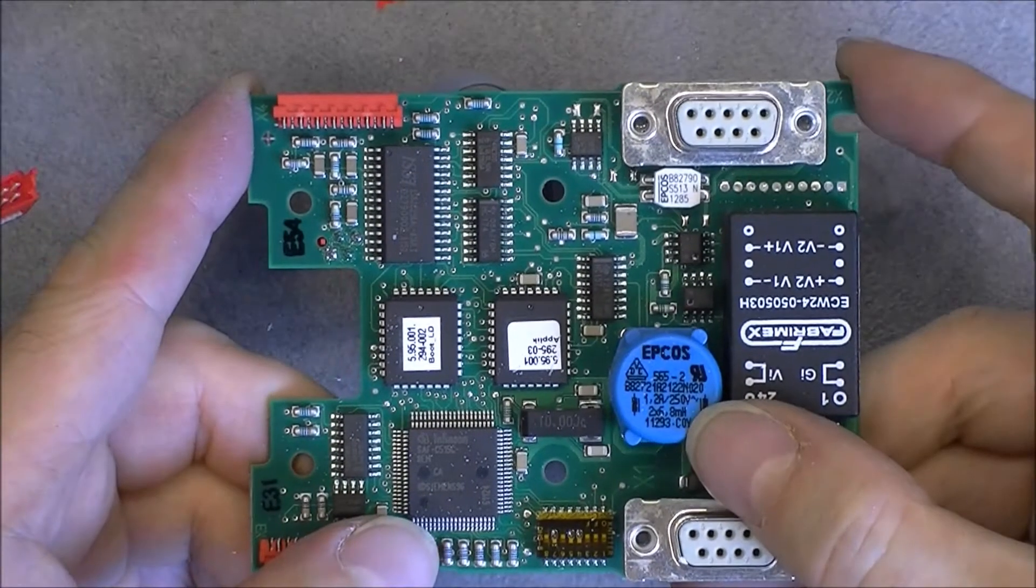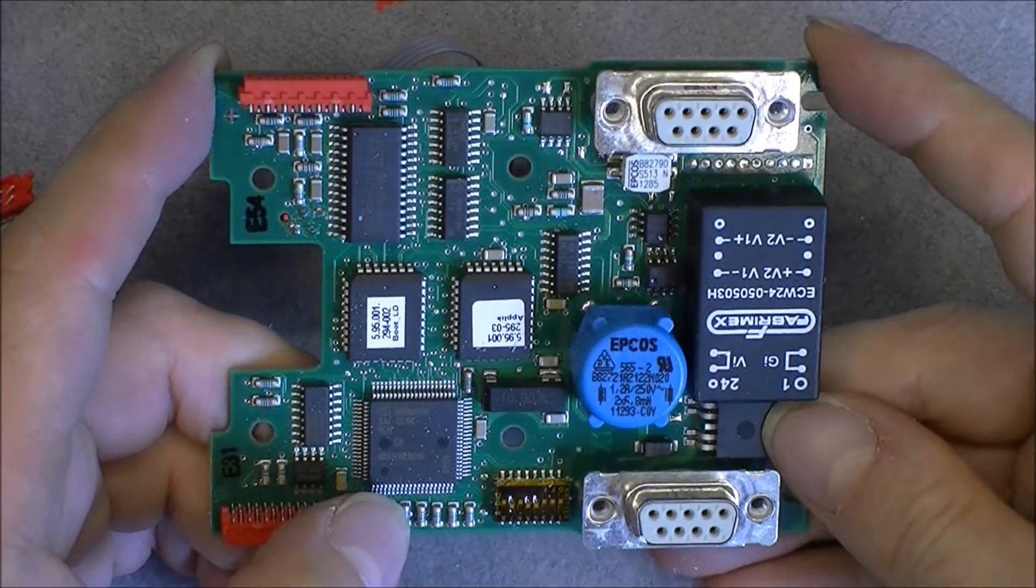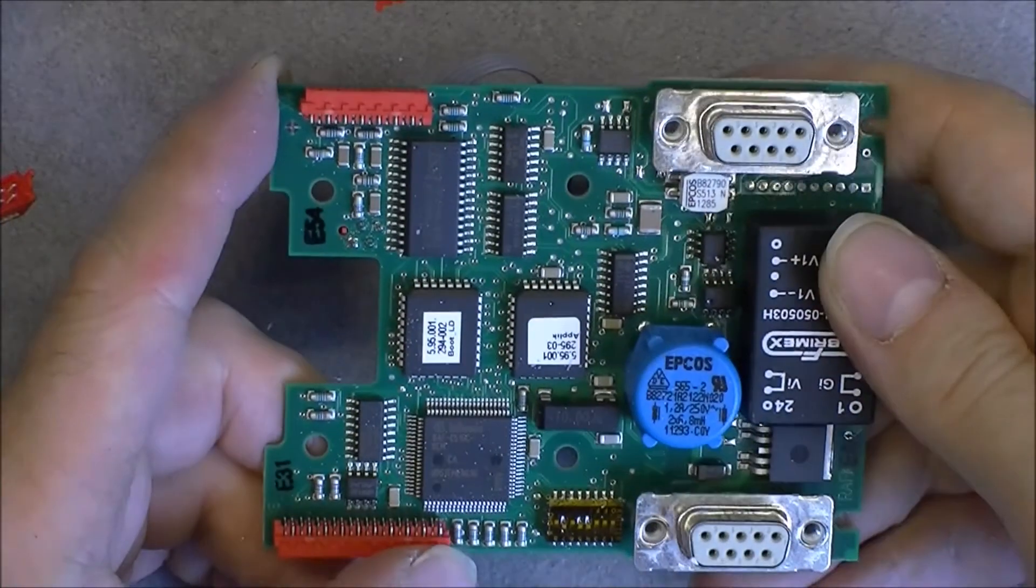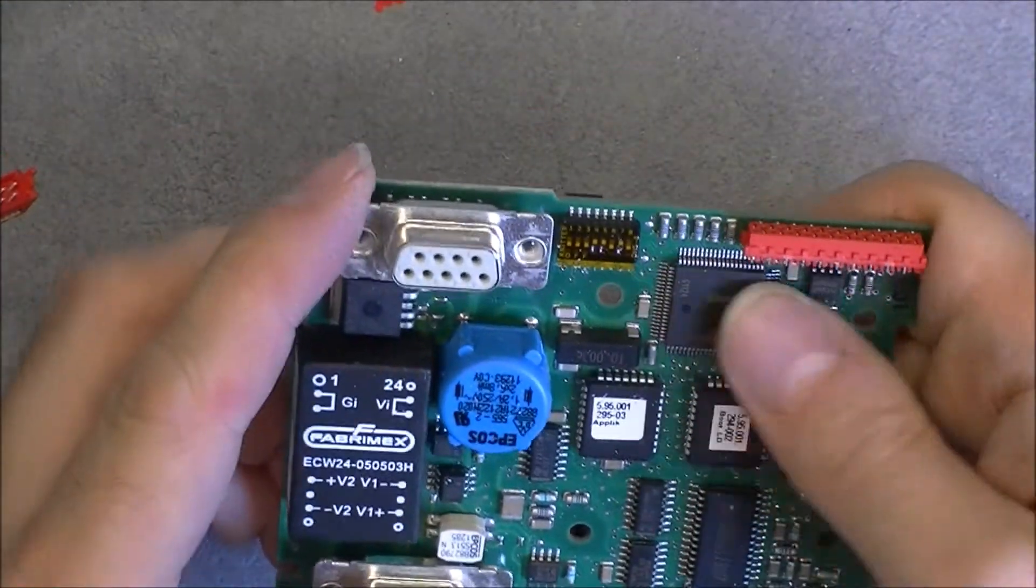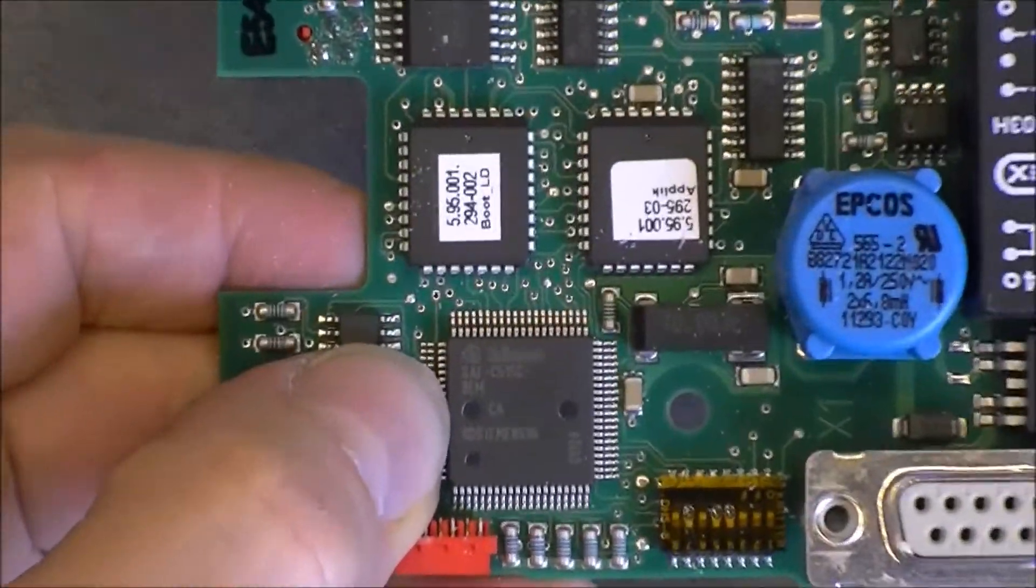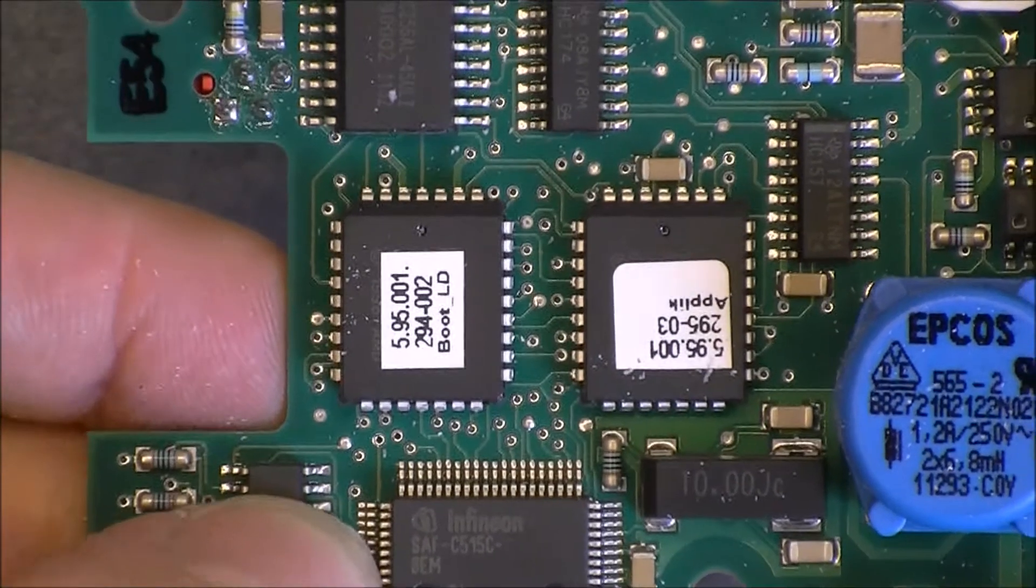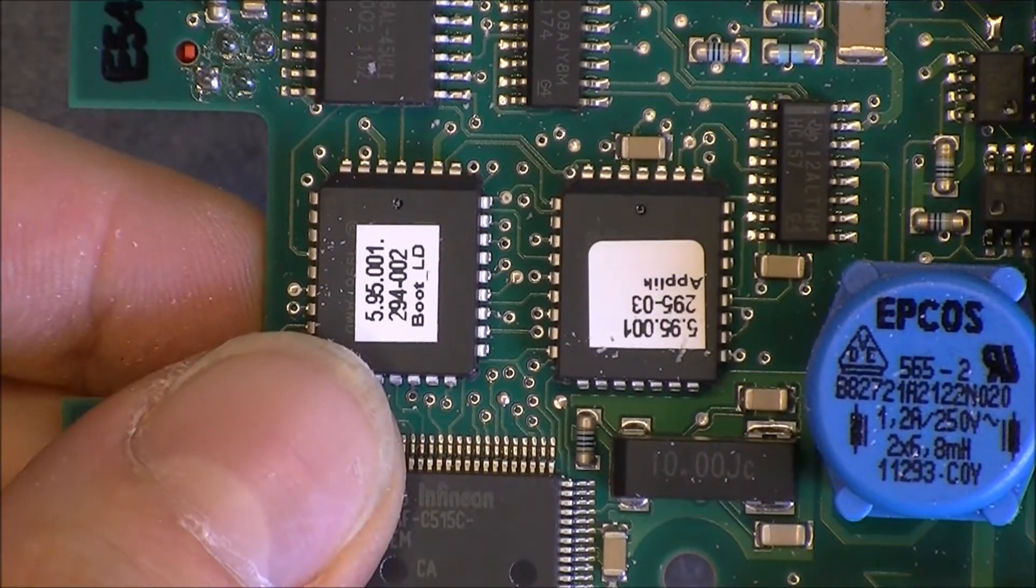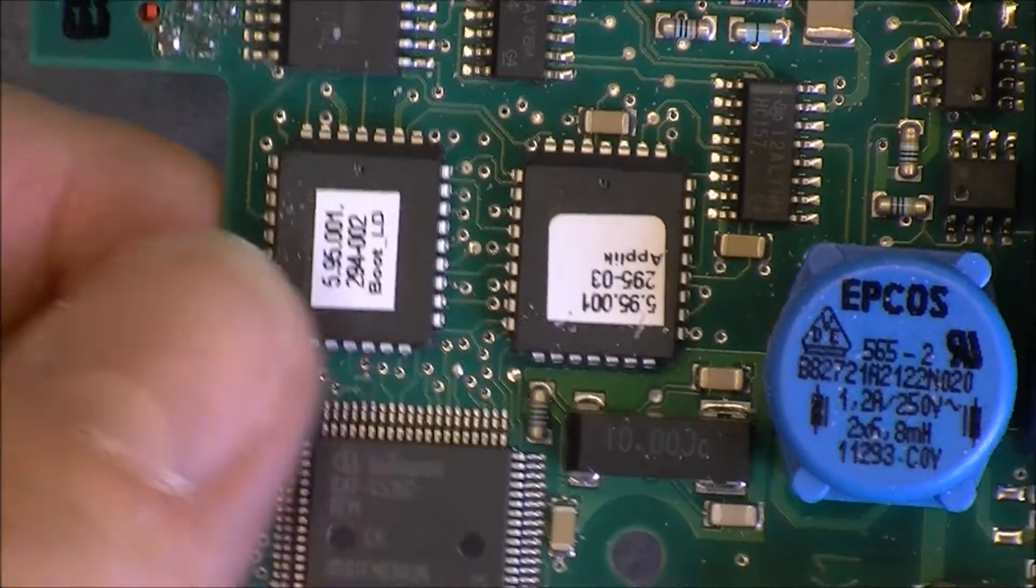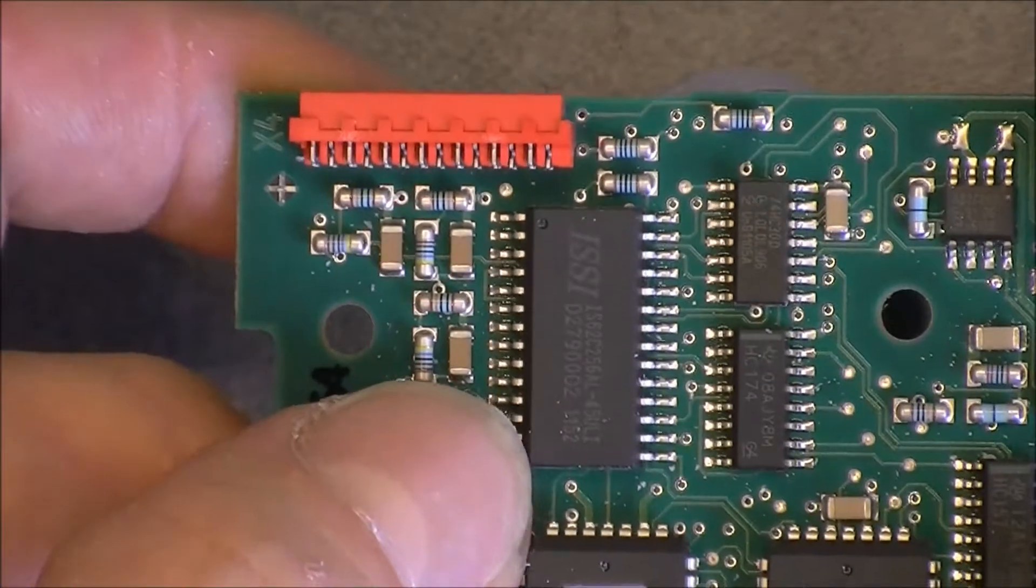A Fabrimax DC to DC power converter, some EPCOS filtering inductor, some MOSFET or voltage regulator here, one more EPCOS inductor here it seems. We have one Infineon chip, here is the model number for you.